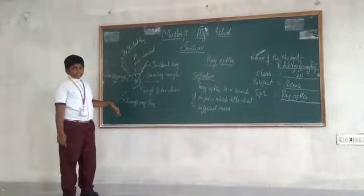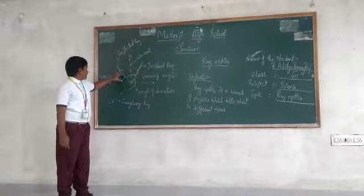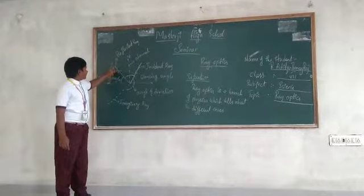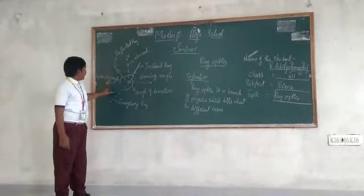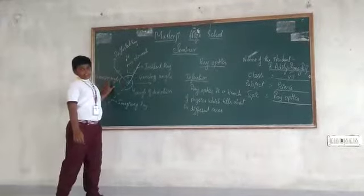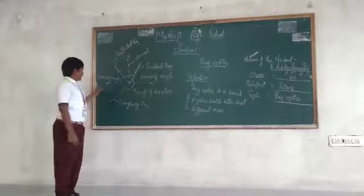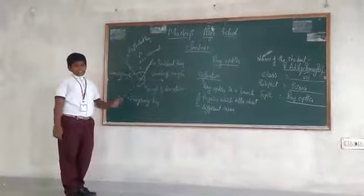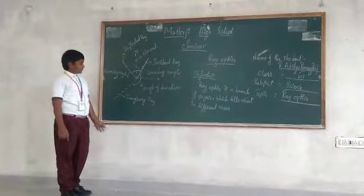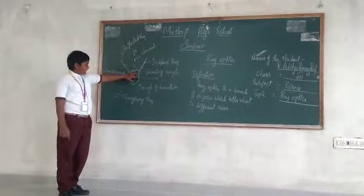The angle of deviation is taken as 2 theta. Theta is the grazing angle, which is the angle between the incident ray and the mirror surface, or equivalently between the reflected ray and the mirror. This 2 theta is equal to the deviation angle.